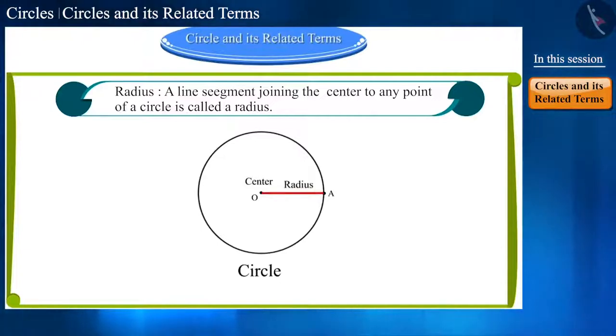Friends, radius is used in two ways. First, as a line segment, such as the line segment OA here. And second, as the length of the line segment OA.